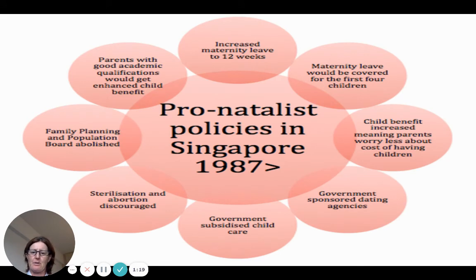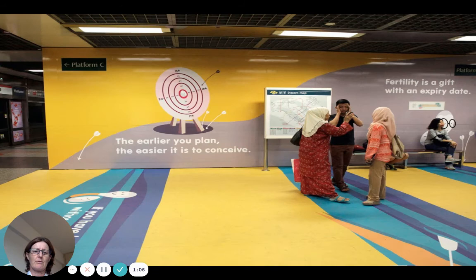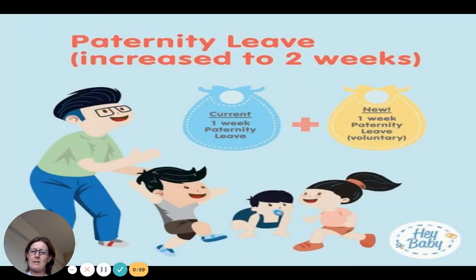The pro-natalist policies began in 1987 and include a lot of advertising, government-sponsored dating such as 'Romance in Singapore,' and increased maternity leave. More recently, paternity leave has been introduced and increased from one to two weeks. Media campaigns have been visible at MRT stations around Singapore.